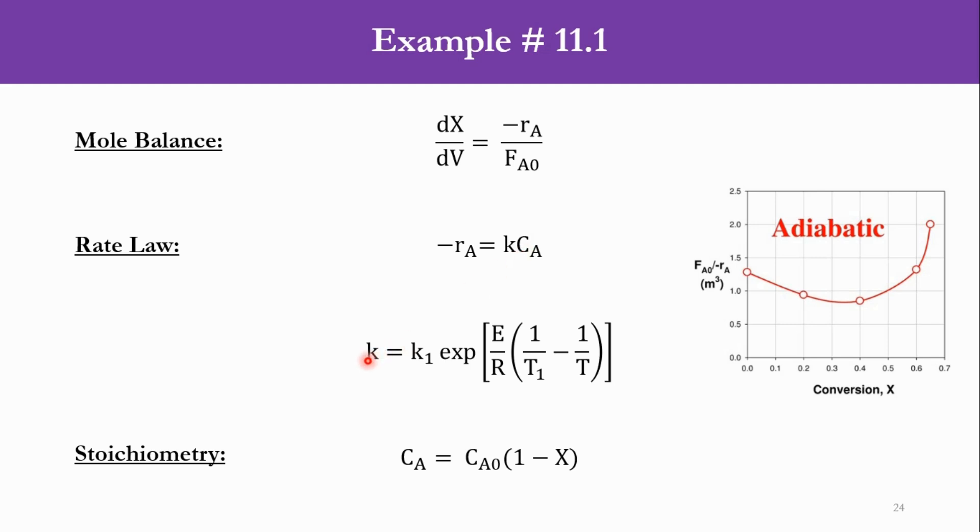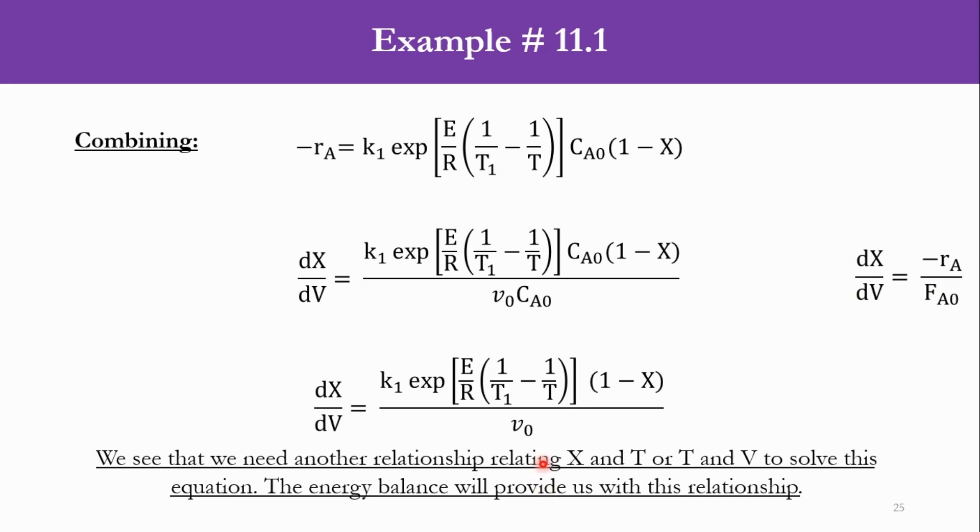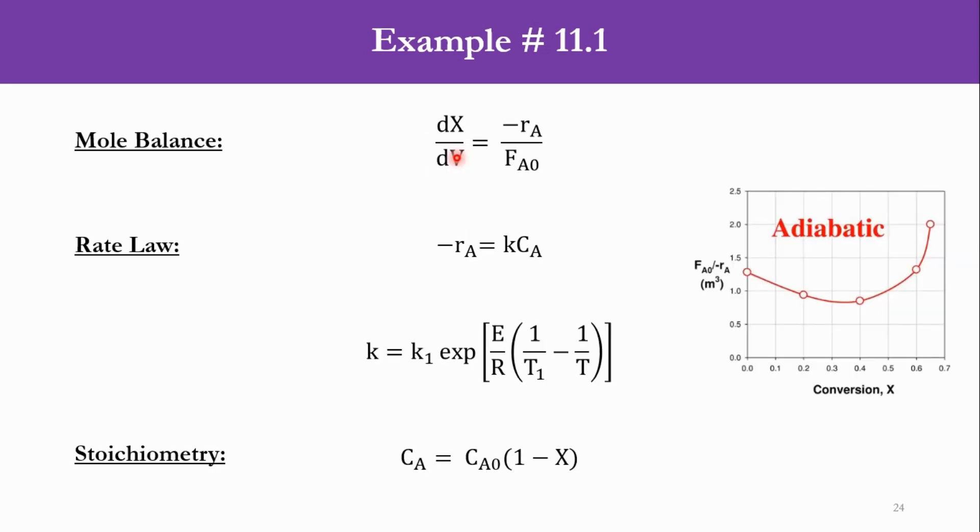k varies with temperature, so k = k1·exp[E/R(1/T1 - 1/T)]. This equation is from chapter 3. For stoichiometry, chapter 4 is followed: CA = CA0(1 - X). Now substituting the values of k and CA into the rate equation.